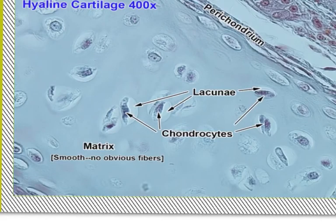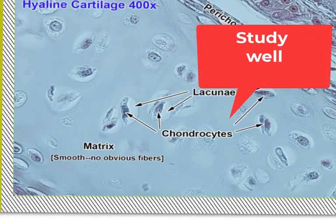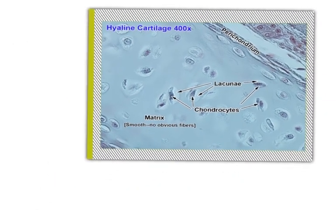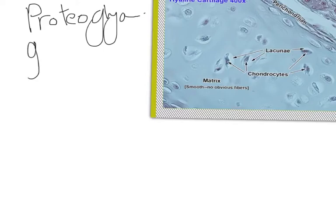Then we have here the matrix. This area, which is called the matrix, is condensed around the lacunae to form the capsule. So this homogeneous basophilic area is called the matrix. Here you may be asked about the consistency of the matrix. This matrix is formed of proteoglycans and glycoproteins in addition to water. These are the components of the matrix: proteoglycans, glycoproteins, and water.